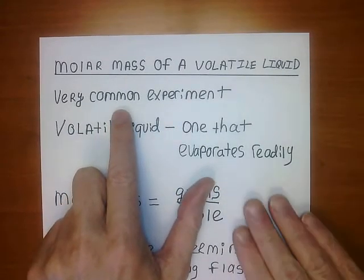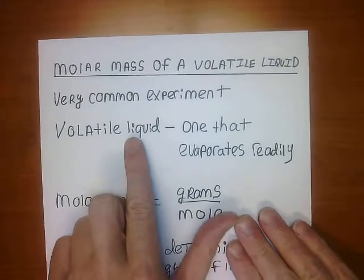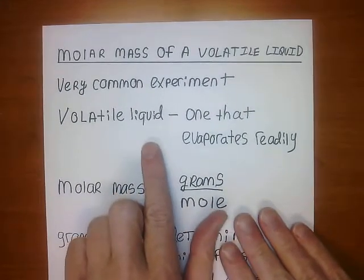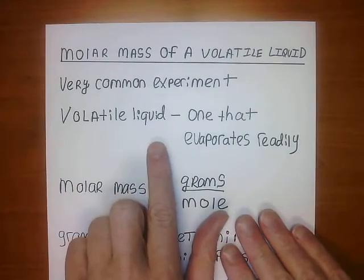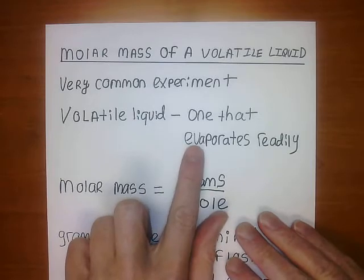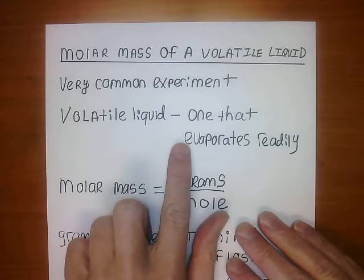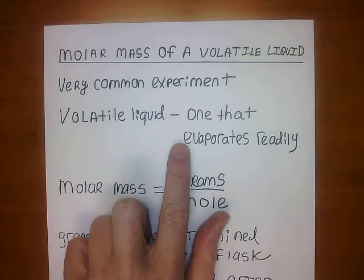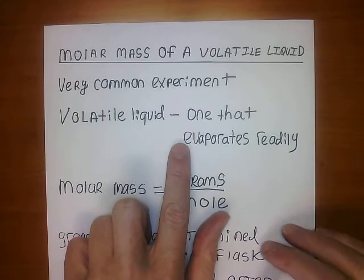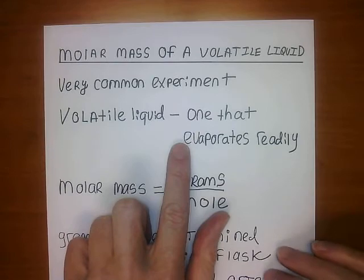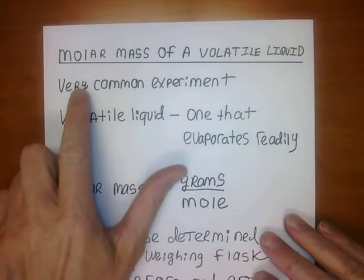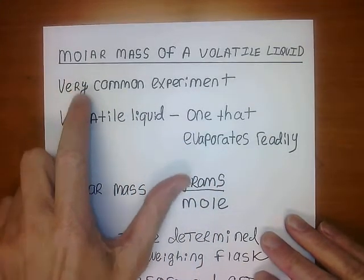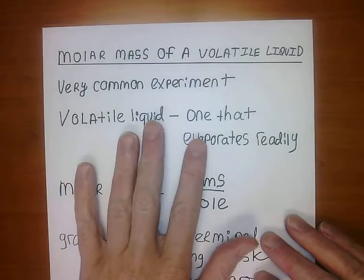The first question is: what is a volatile liquid? It is something that evaporates readily. Things like acetone, even isopropyl alcohol — they all evaporate rather quickly. So what we're out to determine is the molar mass.